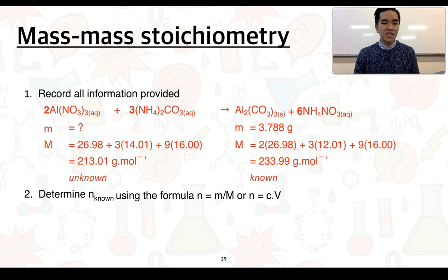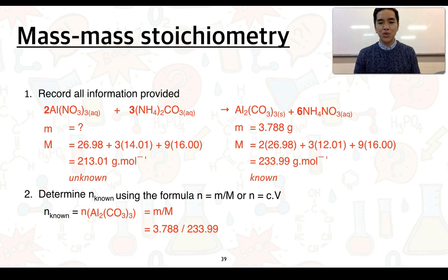So, the second part of this is to determine the number of moles of our known using one of those two formulae, and hopefully you can see we're going to use the first one. So, the number of moles of our aluminium carbonate is mass over molar mass. We've got 3.788 divided by 233.99, which is roughly 0.01619 moles. Keep that in your calculator.